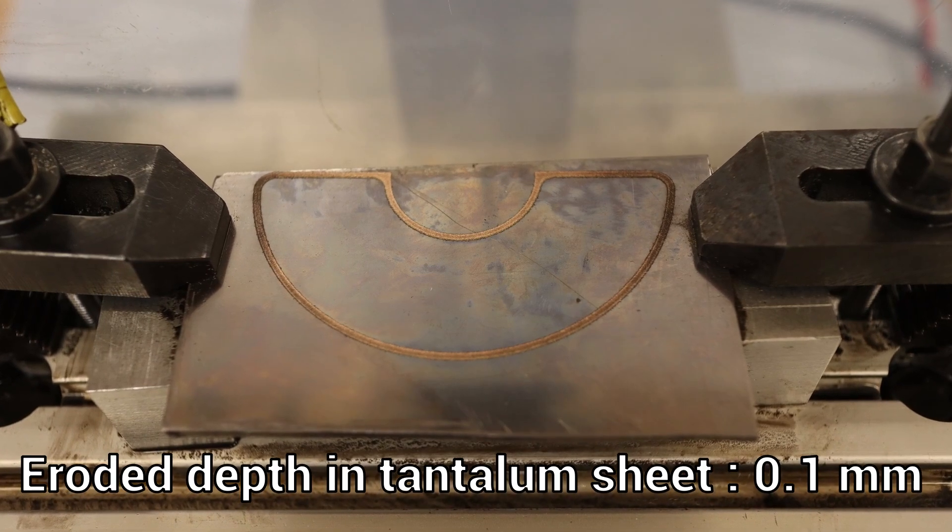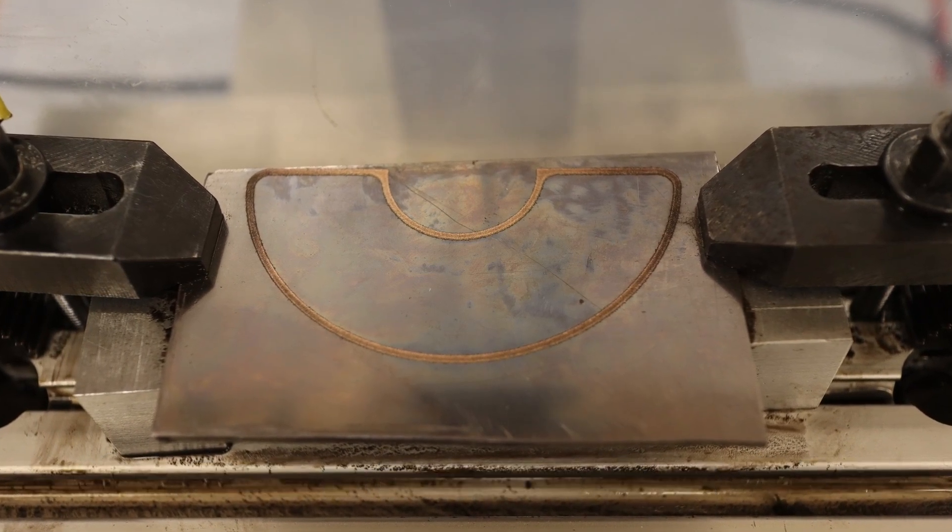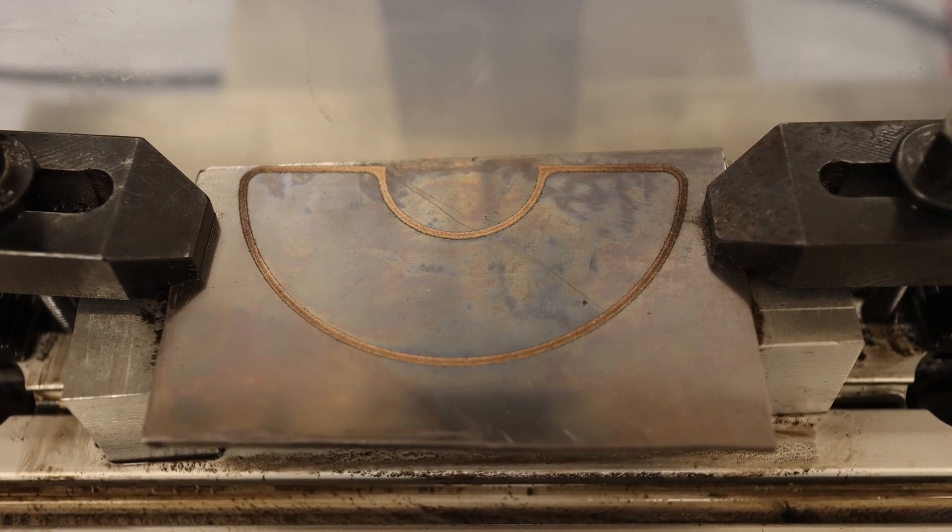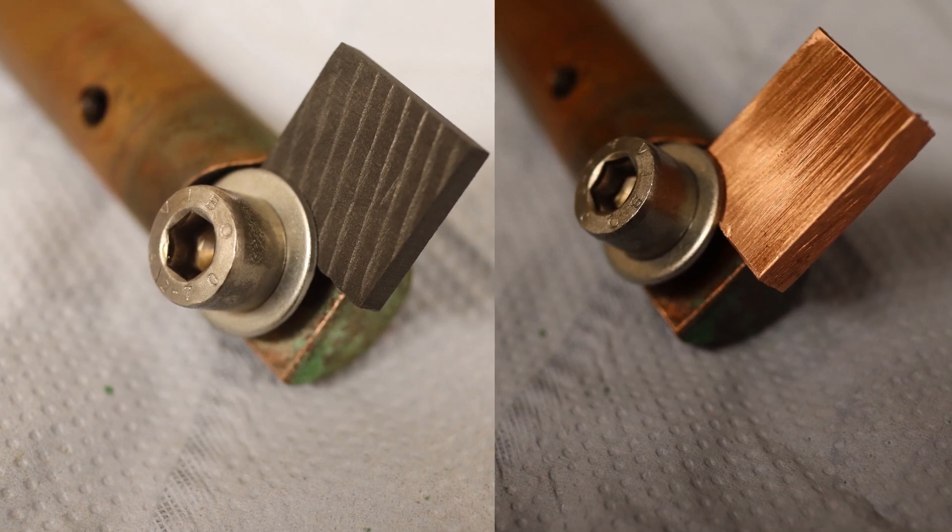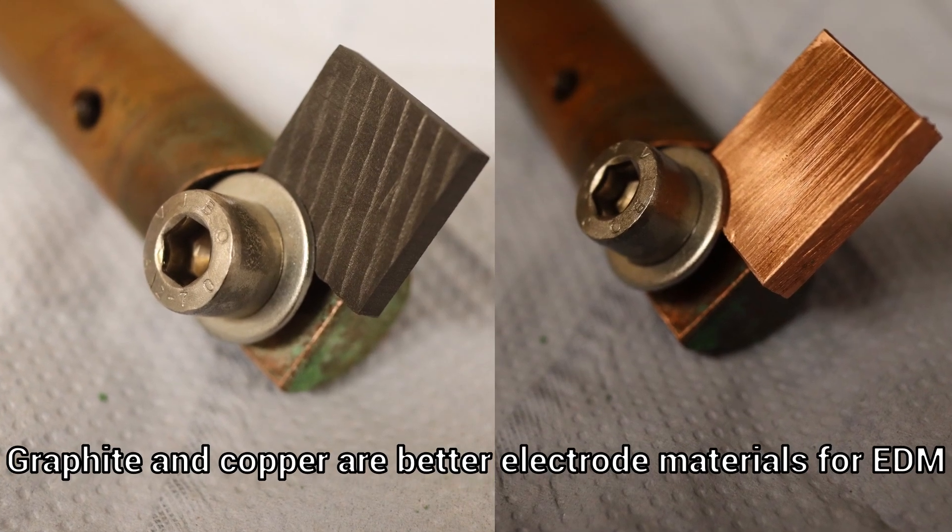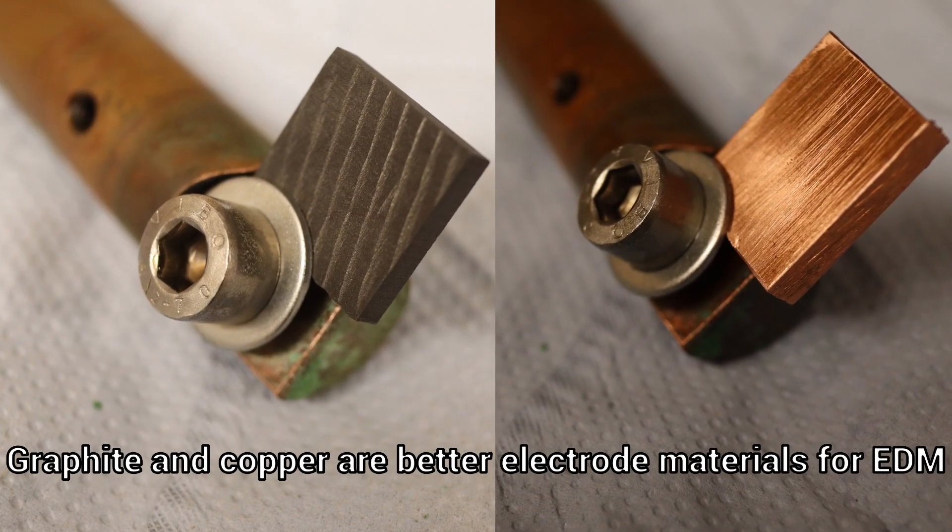I thought that with my pulse EDM the issue of electrode wear was over, but with tantalum it looks different. Since brass is not the ideal electrode material, I tried using graphite and copper.